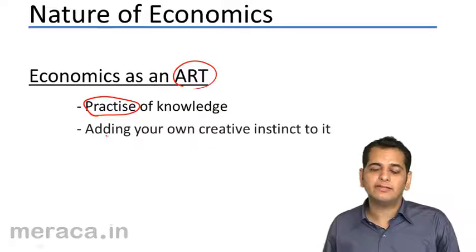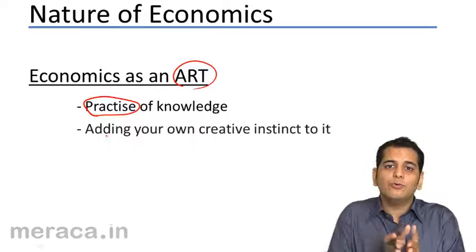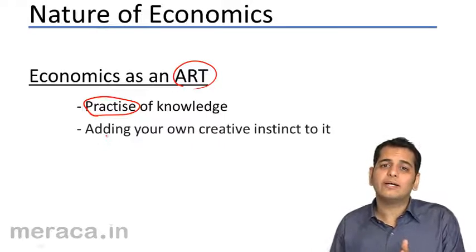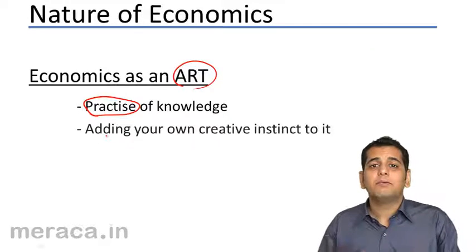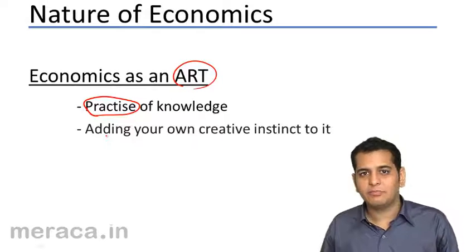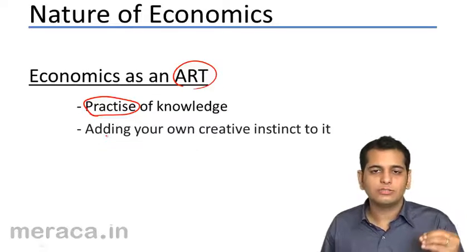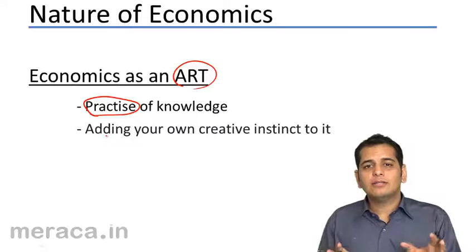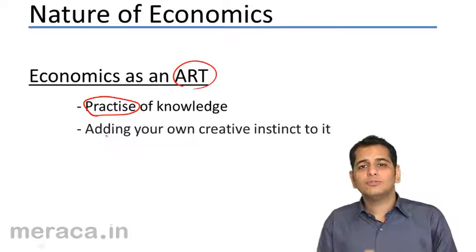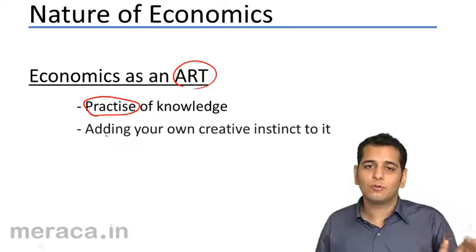Art is also about adding your own creative instinct to the knowledge you acquired. Once you add your own creativity to it, it becomes unique to you. For example, people learn to bat in a similar way — coaches teach it similarly — but different people bat differently: some bat aggressively, some bat defensively. In short, art is putting your knowledge to use and adding your creativity to it. Now let's see how economics qualifies as an art.